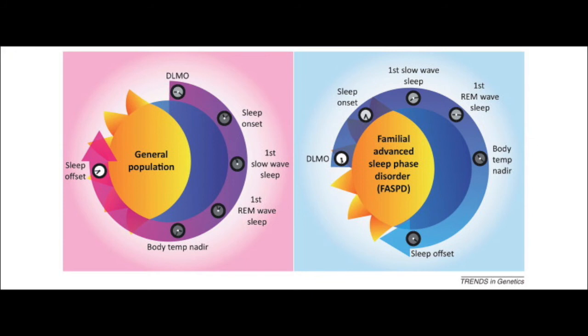Similar to hamsters, a mutation in humans also leads to a shortened circadian period. While disruptions such as shift work and rapid time zone changes can disrupt circadian rhythms, genetic mutations also affect this cycle. The human period 2 gene, or HPER2, in individuals with familial advanced sleep phase syndrome, contains a single base pair mutation.